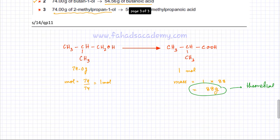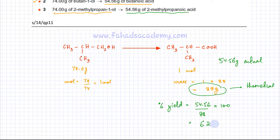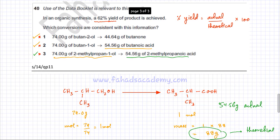The actual value given in the question is 54.56 grams. Using the yield formula: actual (54.56) divided by theoretical (88) multiplied by 100 equals 62 percent. The yield is 62 percent for the third option as well. Therefore all three options are correct, and according to the answer key, the answer is A.